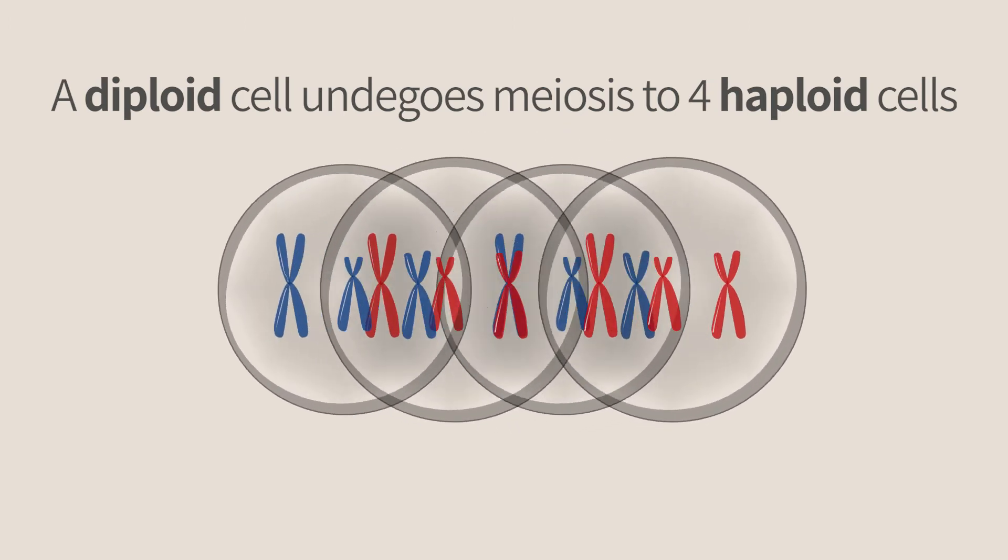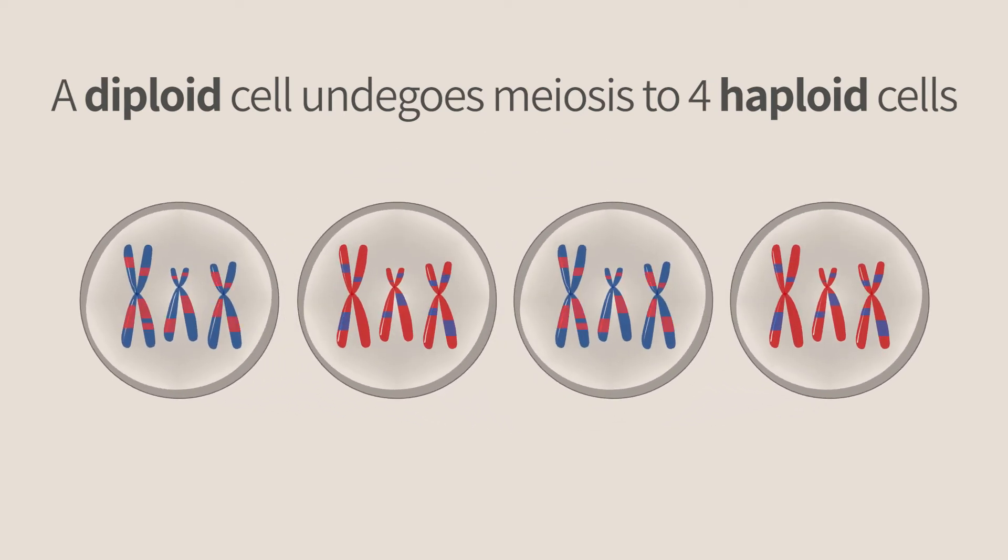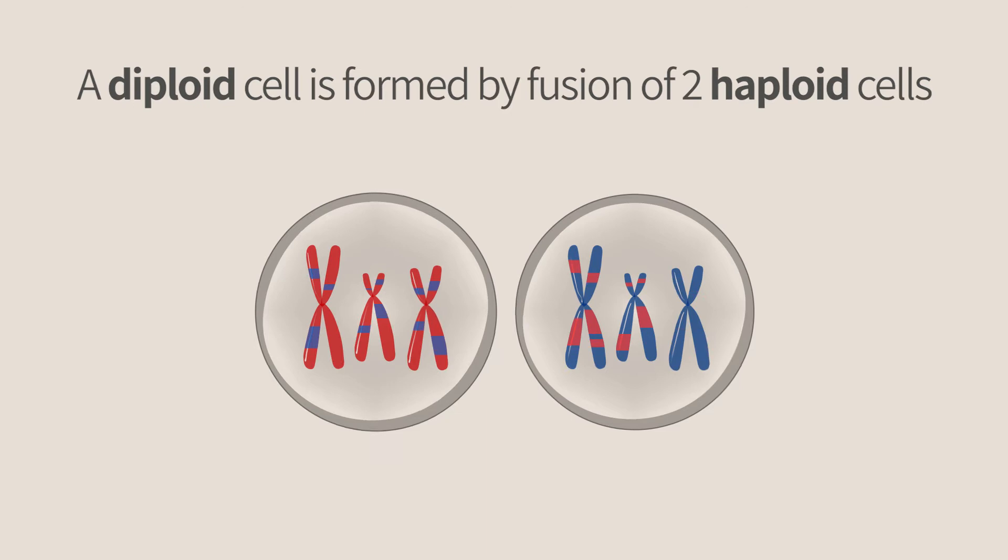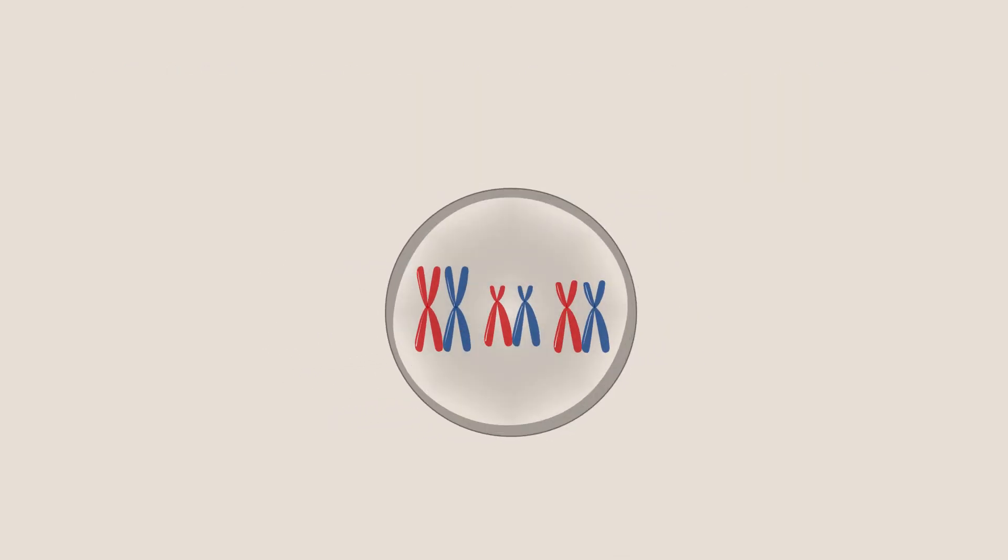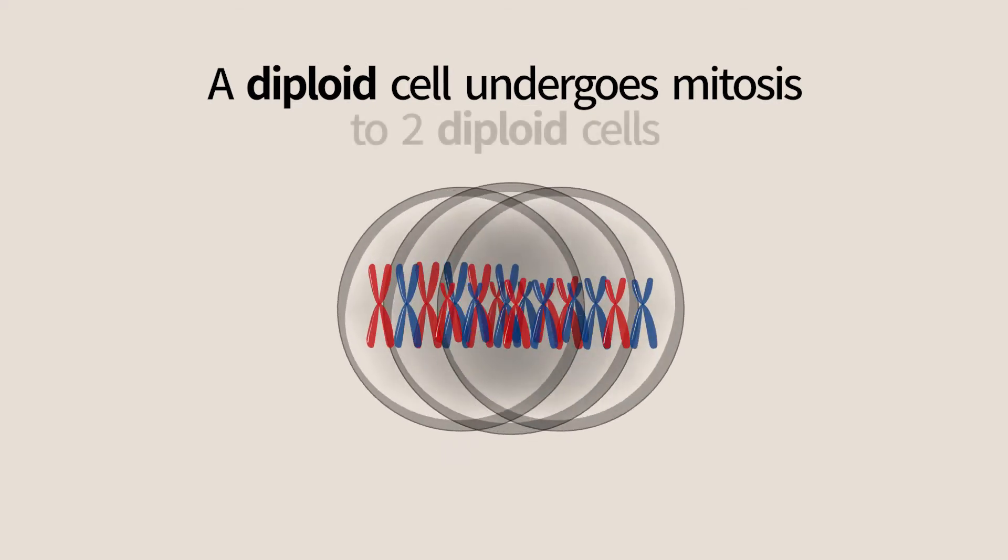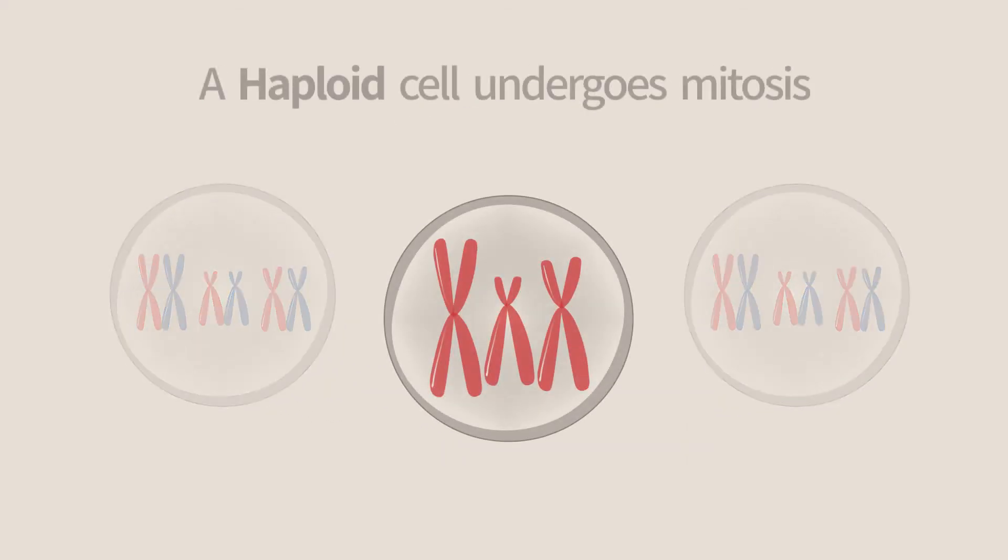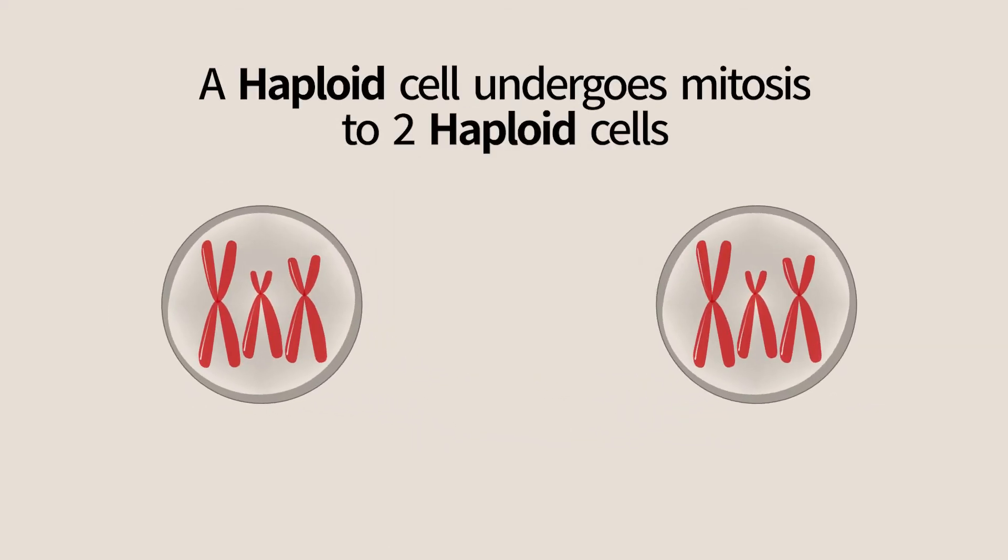Haploid cells are formed by meiosis from a diploid cell. A diploid cell is formed from two haploid cells that fuse in fertilization. Both cell types can also form by mitotic division that conserves the haploidy. A diploid cell that undergoes mitosis gives rise to two diploid cells and a haploid cell gives rise to two haploid cells.